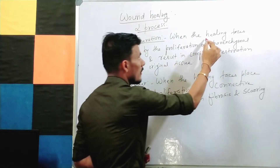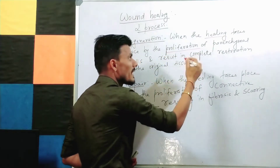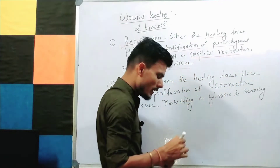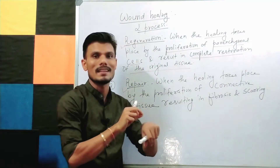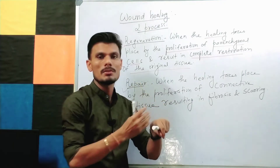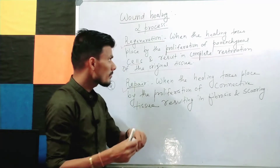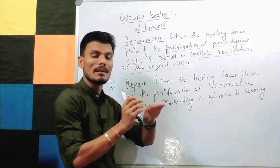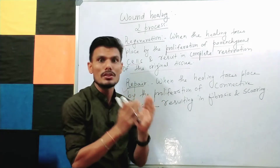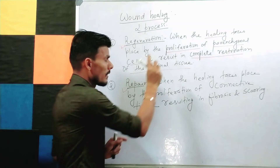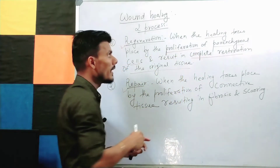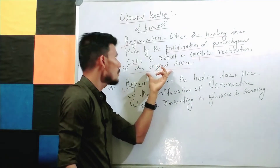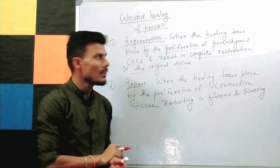Regeneration is when wound healing takes place by the proliferation of parenchymal cells, resulting in complete restoration of the original tissue. Practically, when a cell is injured, those cells are replaced by the growth of new cells and there is complete restoration — the cells recover and return to normal. This is called regeneration. There is no scarring in regeneration.